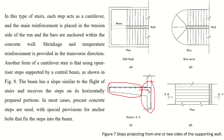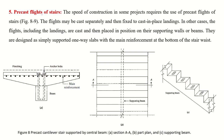Because of the cantilever behavior, the steel distribution is at the top due to negative stresses. Another type is precast stairs: you first construct the supporting beam, then install the precast stair slabs onto it.